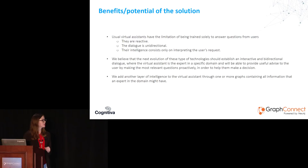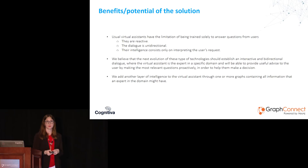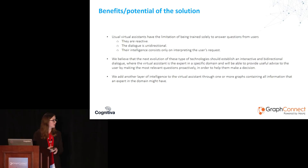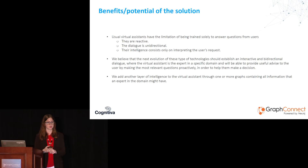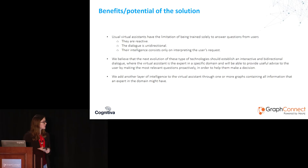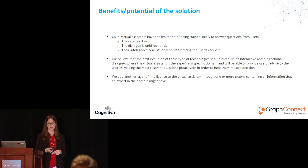Usual virtual assistants have the limitation of being trained only for answering a user's questions — in general they are reactive, the dialogue tends to be unidirectional, and their intelligence consists only of interpreting a user's request and giving an answer. What we think is the next step for this type of technology is to establish an interactive and bidirectional dialogue, where the virtual assistant is the expert in a specific domain and can provide useful guidance by making the most relevant questions proactively to help users make a decision. We added another layer of intelligence to the virtual assistant through one or more graphs containing all the information an expert in the field might have.